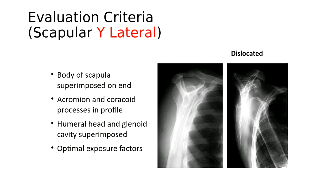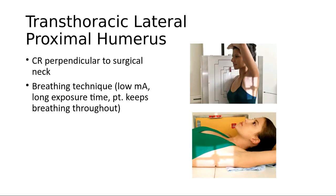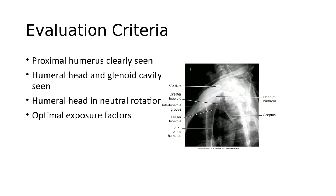If the patient is unable to position for the Y lateral, we could also do the transthoracic lateral of the proximal humerus. The affected arm is against the board or IR and the unaffected arm is raised. The central ray is perpendicular to the surgical neck. A breathing technique is used — a long exposure time with the patient breathing throughout — which blurs out the lungs and ribs so you can make out the proximal humerus through the thoracic cavity.